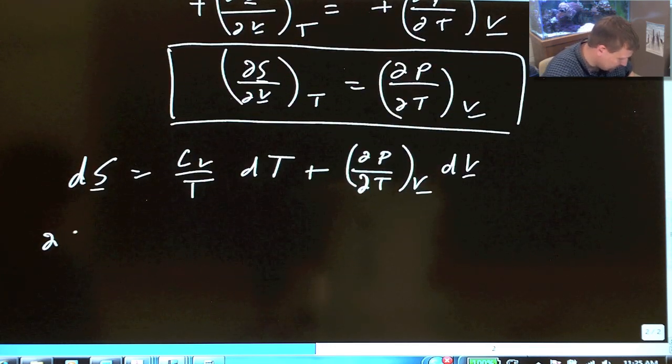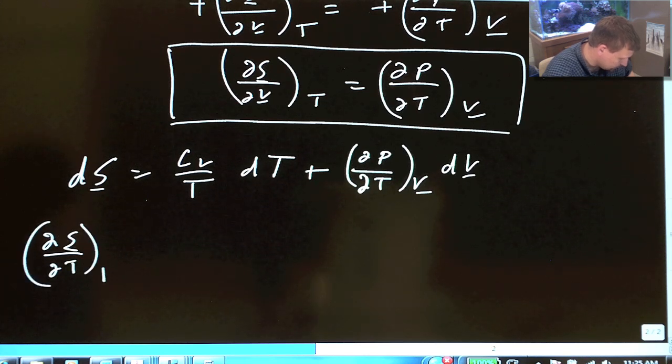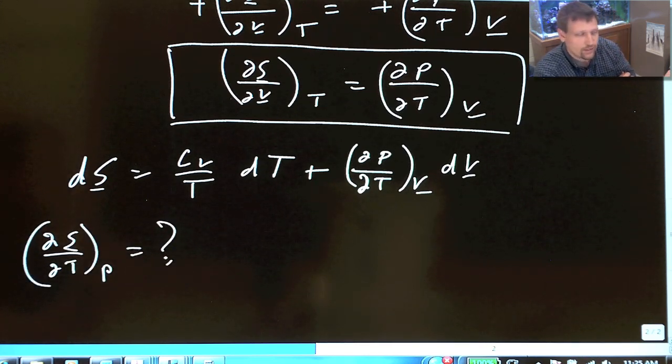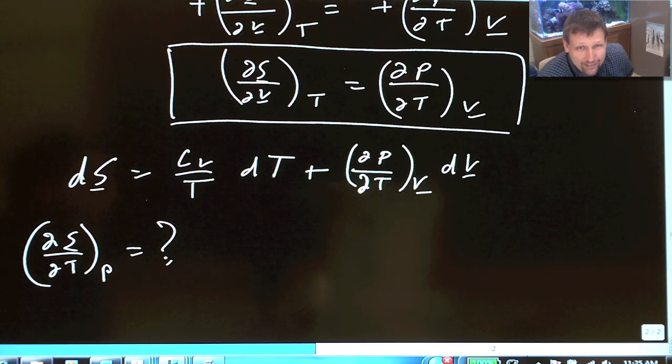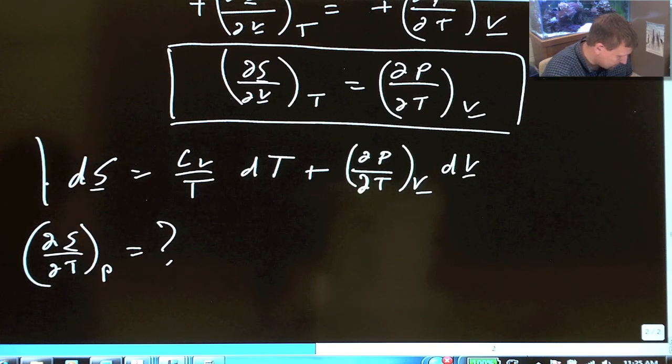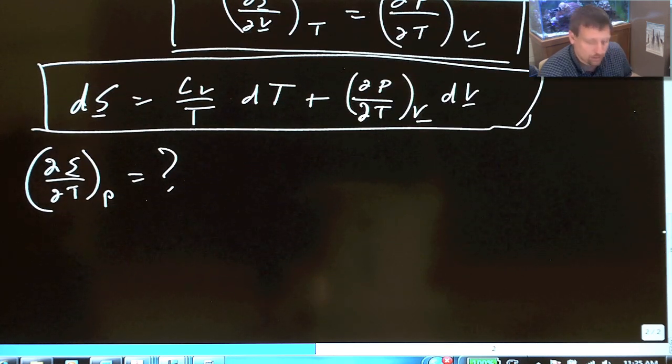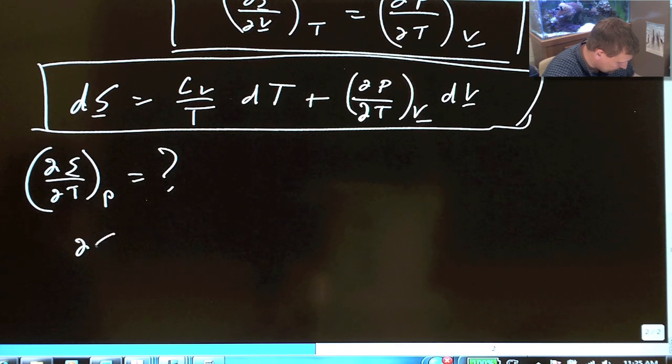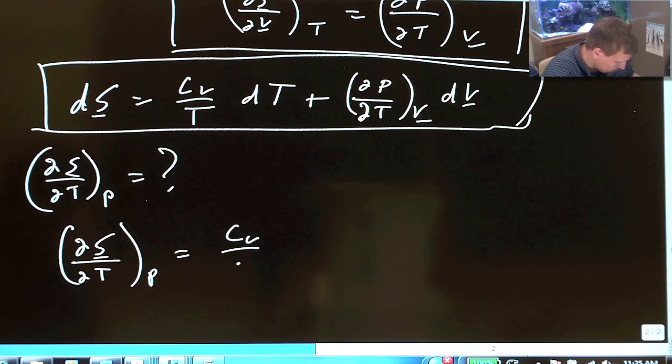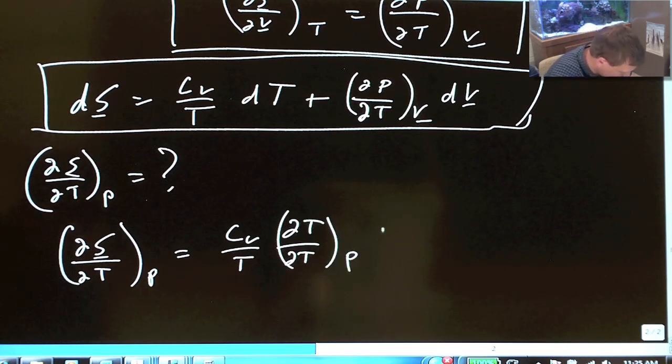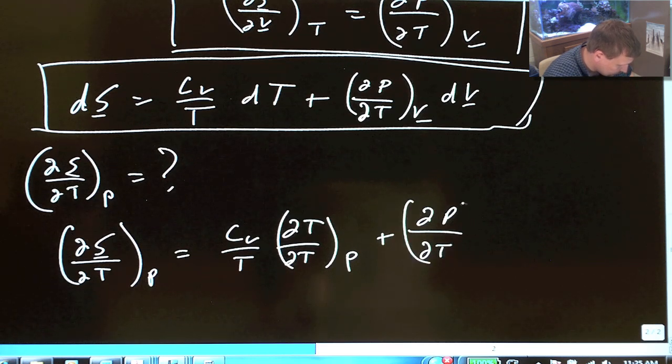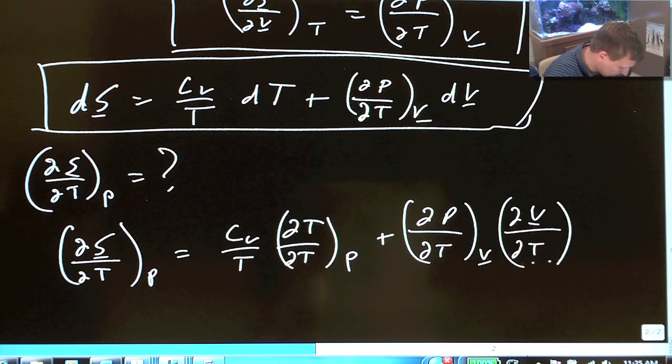Okay, now what about del S del T constant P? Well, we know what that equals up above, it equals the Cp divided by the temperature. How do we get that into this problem? What we can do is take this equation and then just take the partial derivative with respect to the temperature at constant pressure. When we do this, you end up with del S del T at constant P equals Cv over T, del T del T constant P, plus del P del T constant V, del V del T constant P.